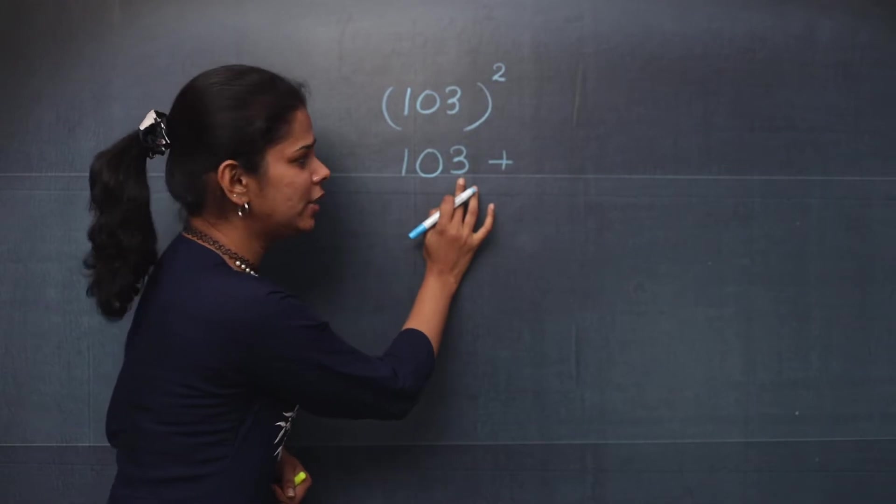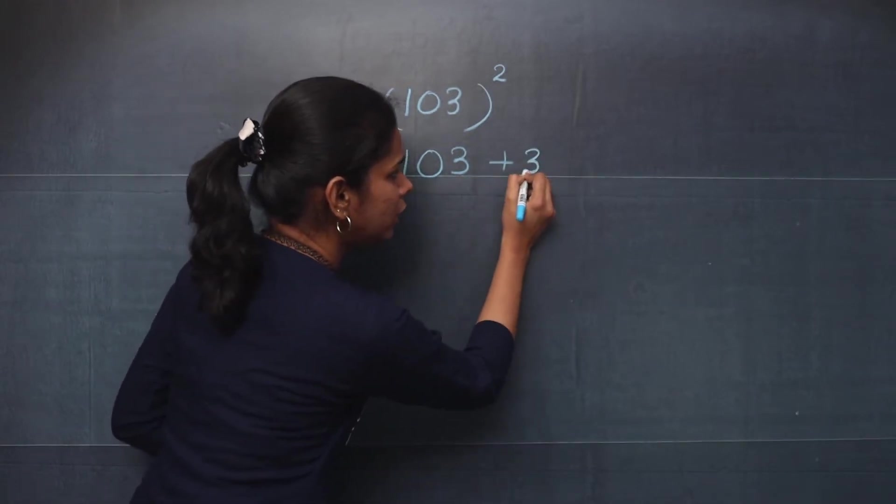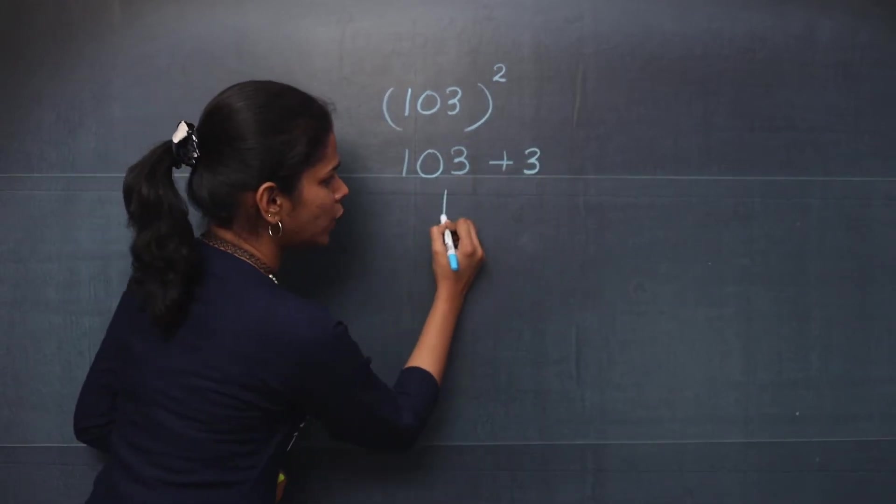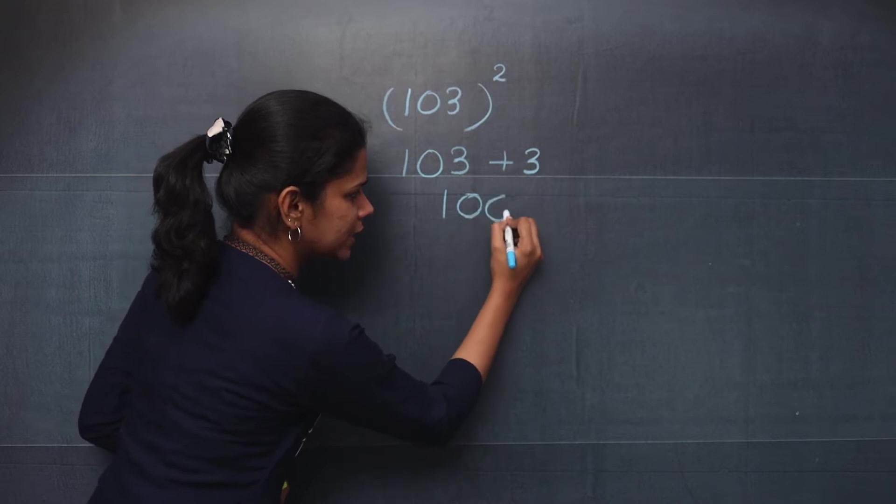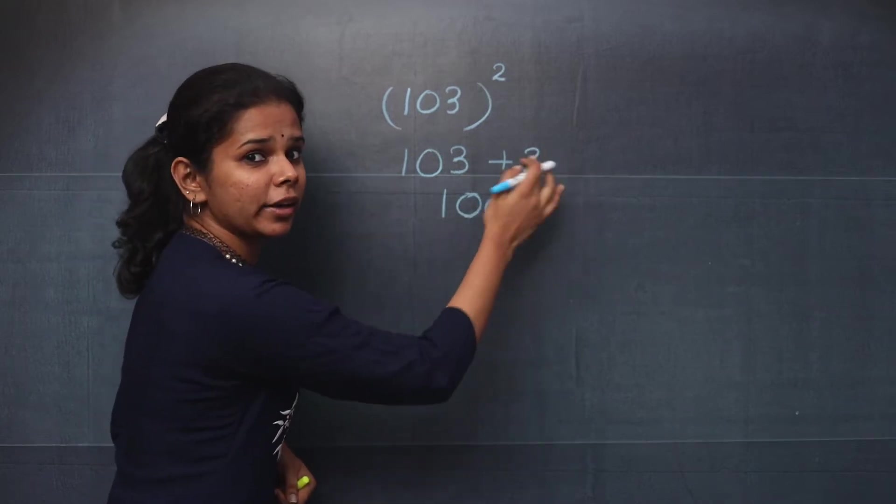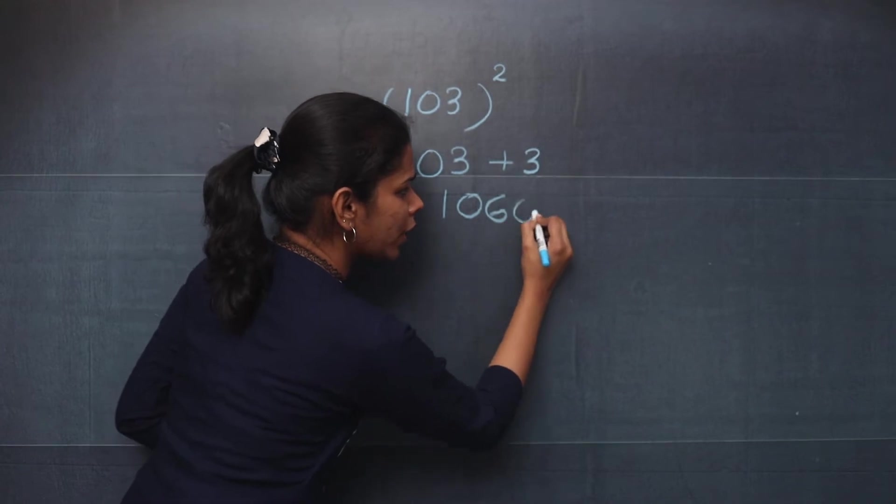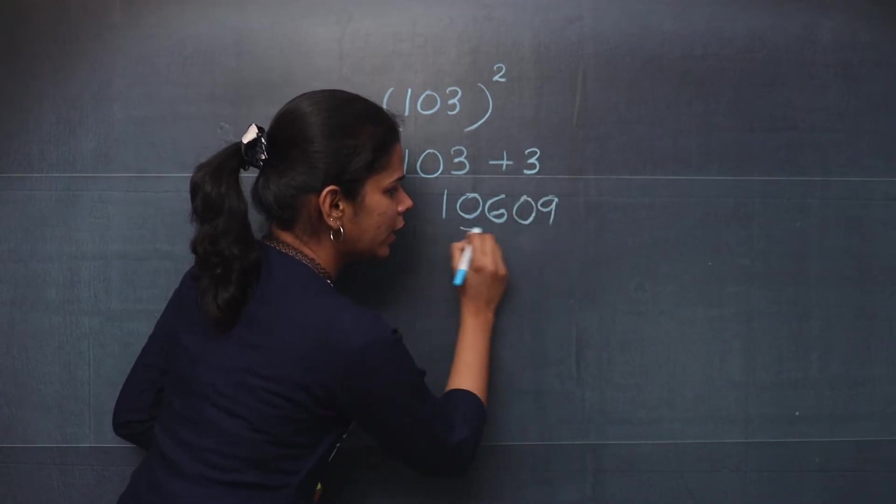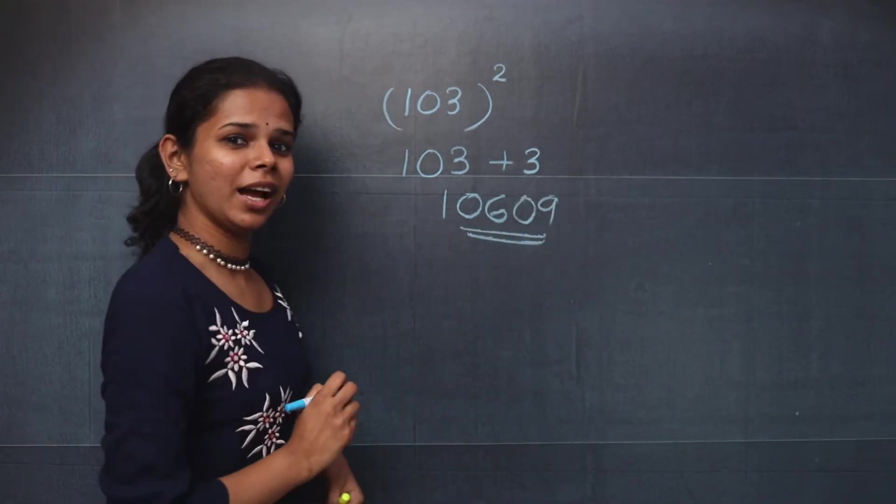What is the digit in the ones place here? 3. So you will add 3 to this number, you will get 106. After that, what is 3 squared? It is 9, but you will write it as 09. So this becomes your answer.